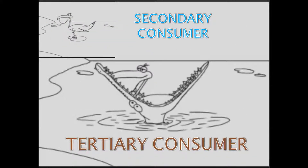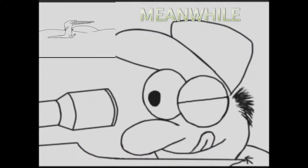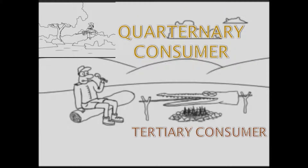Now, in this scenario, the secondary consumer, the eagle, was devoured by a crocodile. This now makes the crocodile the tertiary consumer, since it ate the secondary consumer. Meanwhile, a man with a hunting rifle, hiding behind the bushes, sees the crocodile exit from the pond. He then takes down the tertiary consumer, the crocodile, with his rifle. The man heats up and cooks the crocodile and decides to eat it. He becomes the quaternary consumer, since he ate the crocodile, which is the tertiary consumer.